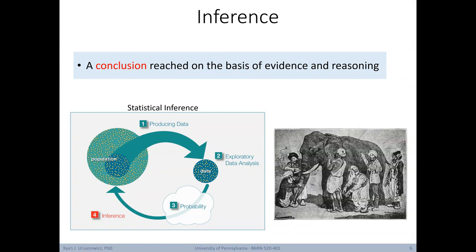Another way to think about inference is the parable of the blind man and the elephant. Every blind man touches a different part of the elephant — that's their own individual sample. Each man might make a different inference based on what they're touching. For example, the man touching the trunk might think it's a snake, and the man touching the tail might think it's a horse.